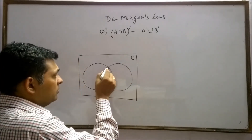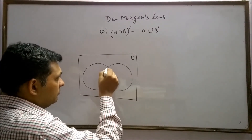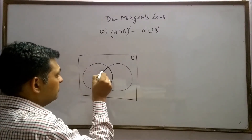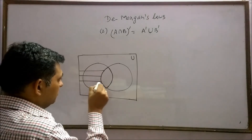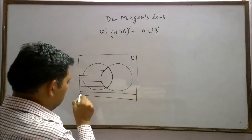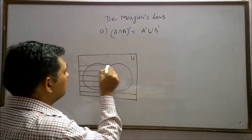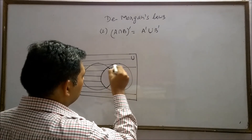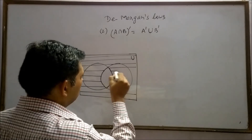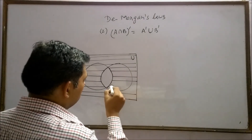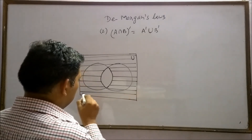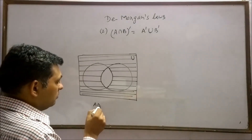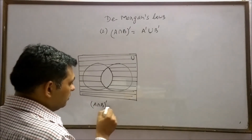A intersection B is this region. Its complement means everything except this region. So this shaded region represents the whole complement of A intersection B.